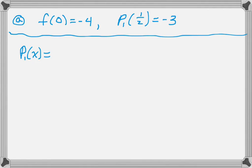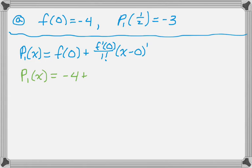So p1(x) is going to be f(0) + f'(0)/1! times (x - 0)^1. Now I'm going to substitute in things that I know. I know that p(x) is therefore -4 + f'(0) times x.